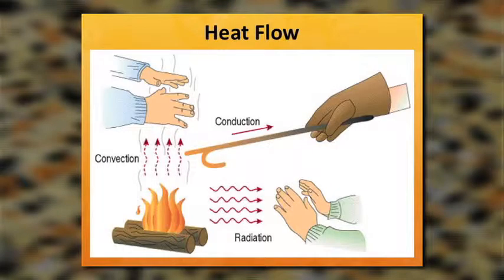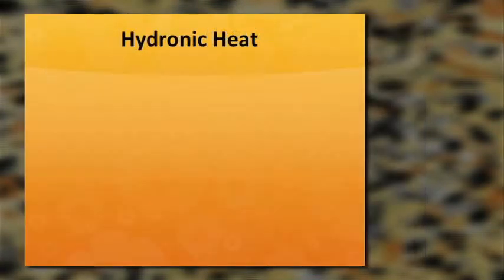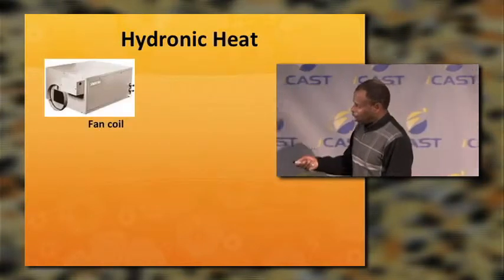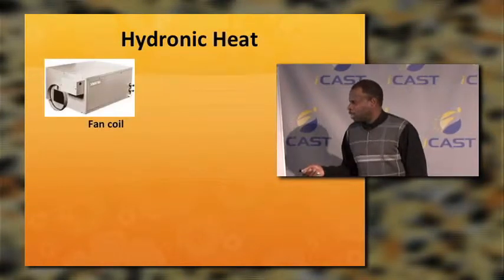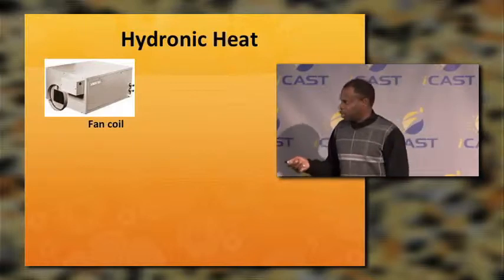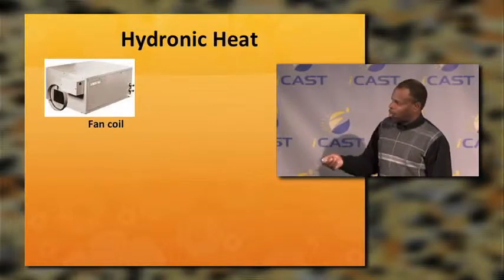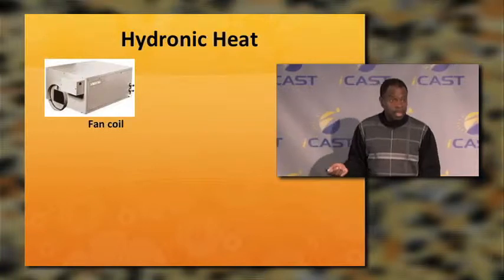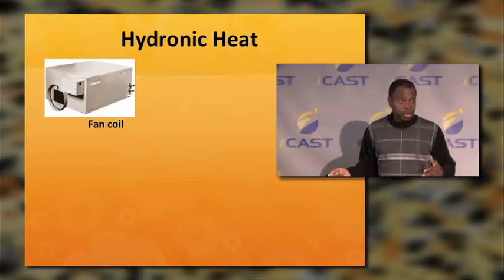Heat flows — we have convection, conduction, and radiation. This is the hydronic heat. This is a fan coil. You'll find this fan coil downtown in office buildings. You can either heat or cool — run hot water through it or run cold water through it, and that's where you get heating and cooling downtown.